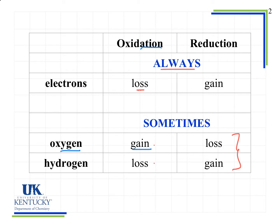For reduction, if we see a loss of oxygen or a gain of hydrogen, we know that a reduction has occurred. And even if we can't actually see where it's happening, we know there is also a gain of electrons. When we gain electrons, we are gaining negative charge, and so the oxidation number will be reduced.